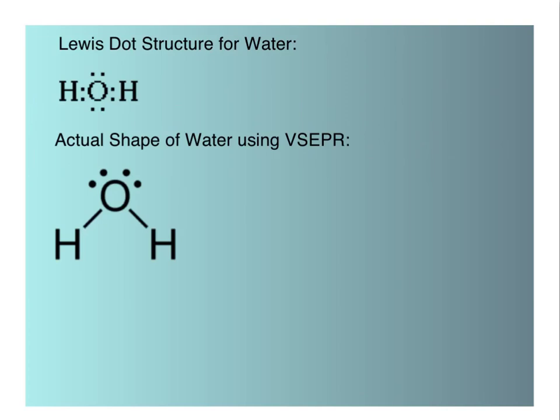Remember, Lewis dot structures don't always indicate what a molecule looks like in three-dimensional space. That's why we use VSEPR theory. Here we have the Lewis dot structure for water, and then what it actually looks like using VSEPR theory. We have a bent shape.